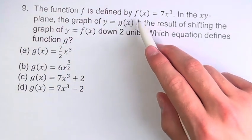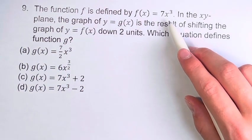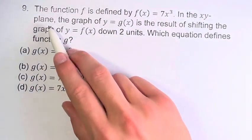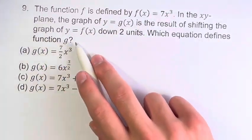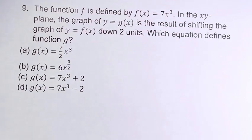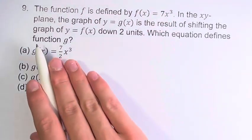we're told that the function f is defined by f of x is equal to 7x cubed. In the xy-plane, the graph of y equals g of x is the result of shifting the graph of y equals f of x down two units. And we're asked, which equation defines function g?